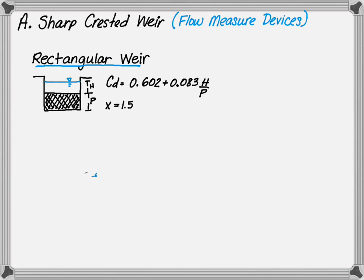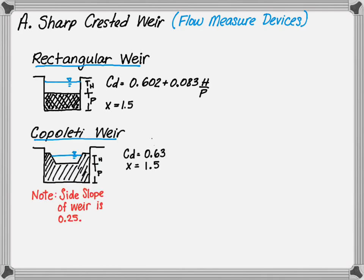The next type of sharp-crested weir is a Cipolletti weir, which is a trapezoidal weir. For a standard Cipolletti weir, the horizontal to vertical ratio is 0.25 to 1. That means the side slope Z is 0.25. The coefficient of discharge is 0.63 and X is 1.5.